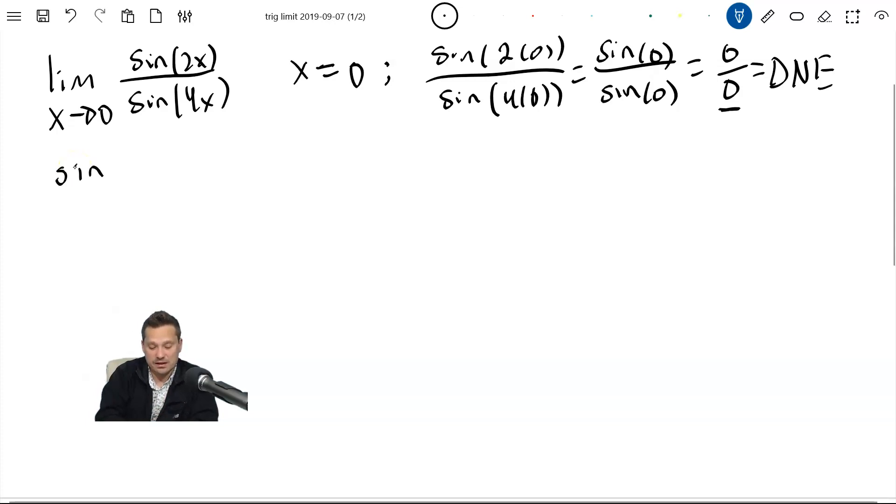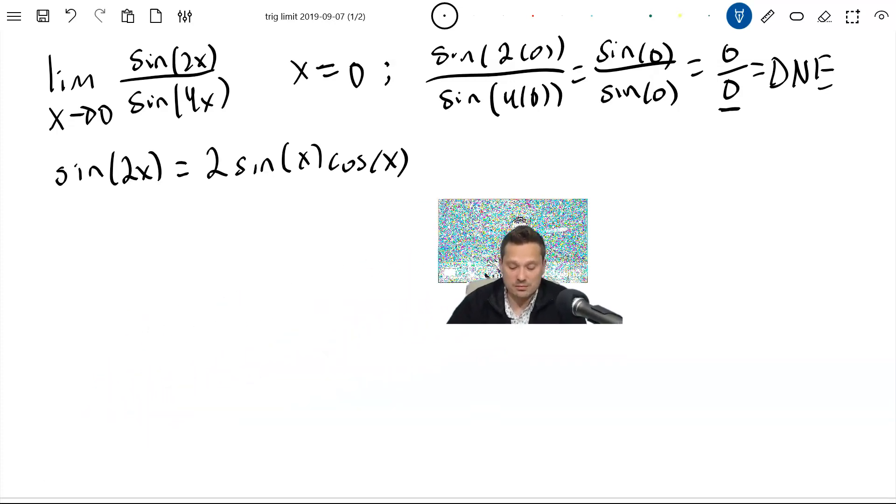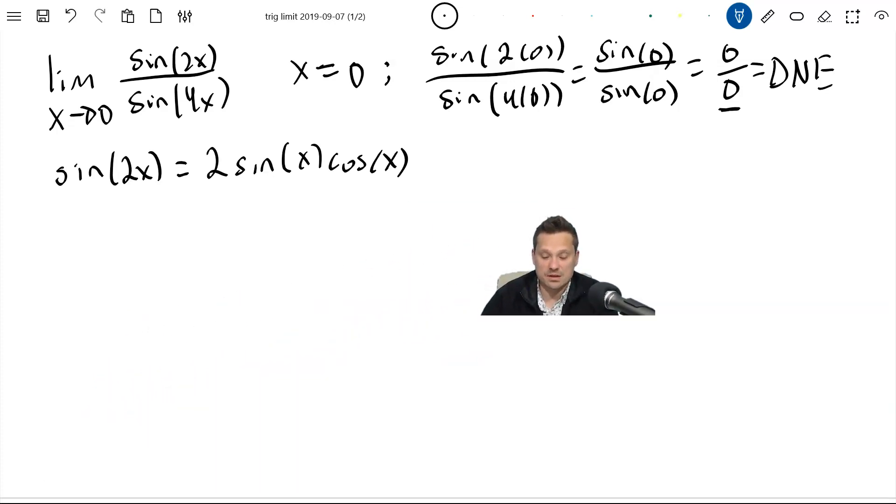So I have that the sine of 2x is the same as 2 sine x cosine x. But a lot of these trig identities actually work even when things are a bit more complex than they appear to be. So what I mean specifically is this will also work when, for example,